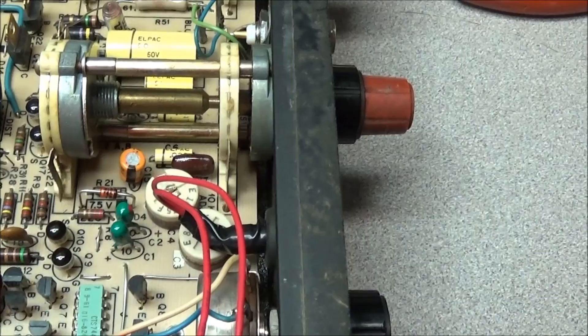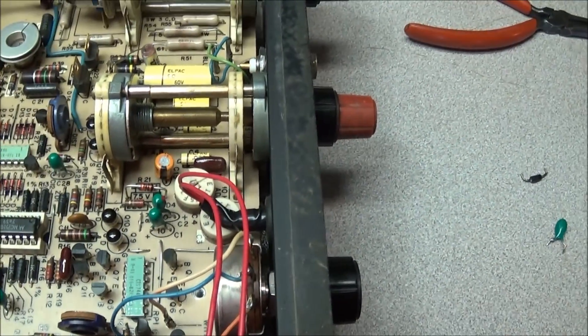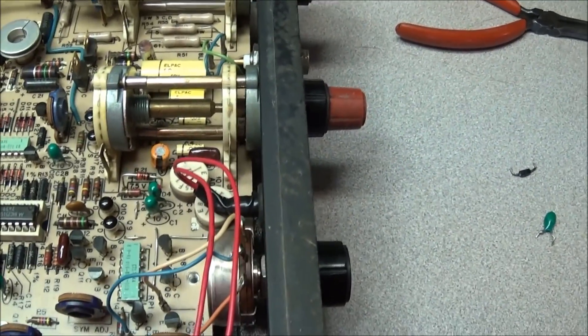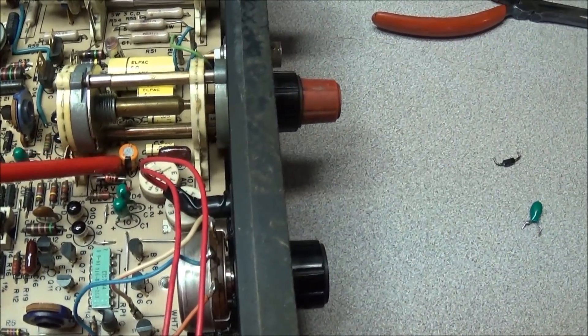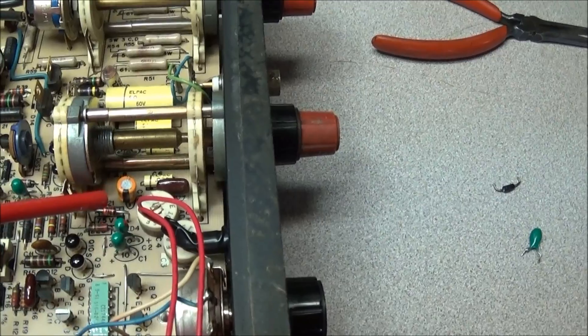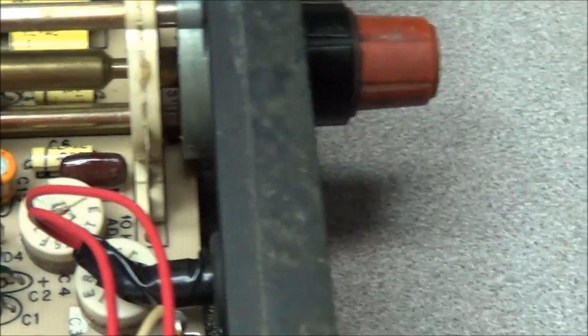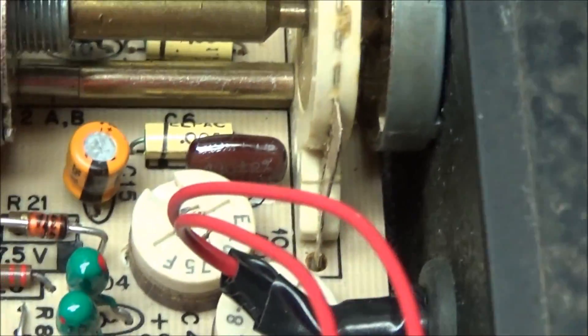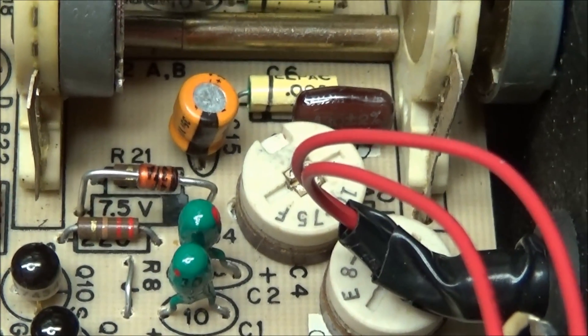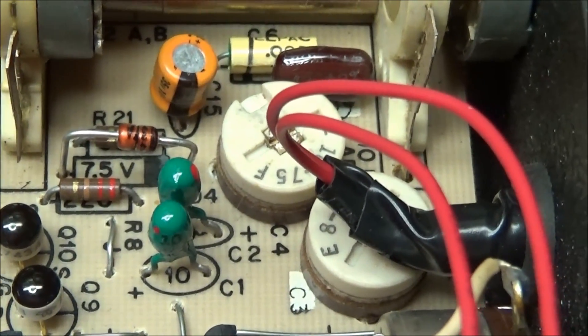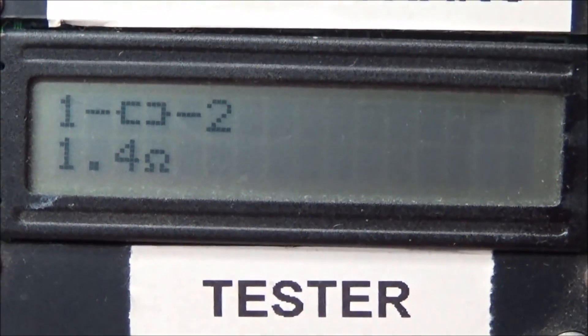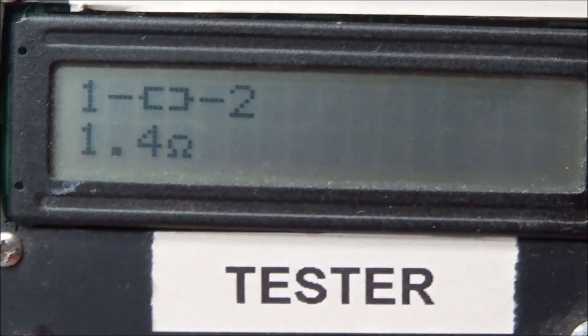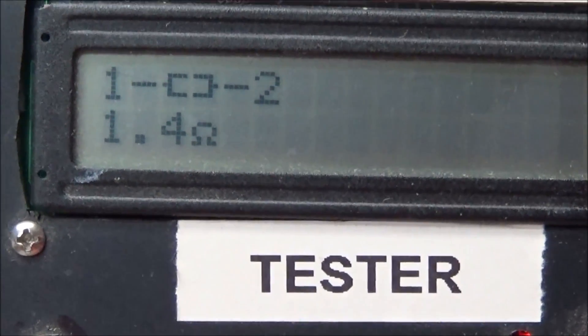I have now removed the bad zener diode and when I checked I still had a short to ground. I was looking at C15, which was a tantalum capacitor - it had also shorted. So I replaced that with an electrolytic and installed a new 7.5 volt zener diode. I've checked the capacitor and it's showing up as a resistor at 1.4 ohms.